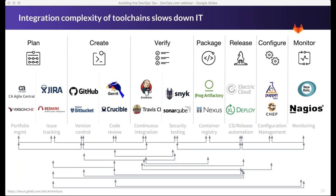This is a typical DevOps tool chain — tons of different tools tied together to deliver DevOps: different tools for planning, code creation, CI, security testing, packaging, release, deploy, configuration management, and monitoring. But the integration complexity of administrating all these products and connecting them together is not like snapping them in a sequence. The interactions are actually complex with multiple connections for each component. For example, your CI needs to connect to version control, but also to code review, security testing, container registry, and configuration management. The permutations are staggering.